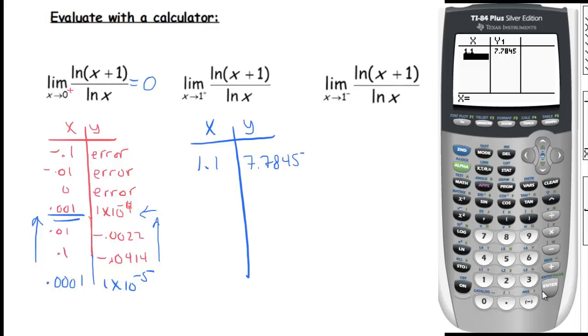Try one point zero one, even closer to one. One point zero one gives you seventy point one six two. Let's try one point zero zero one. You get six ninety three point nine nine. Let's try one more. One point zero zero zero one gives you six thousand nine hundred thirty two point three. So it looks like as x is approaching one from the right hand side our y value is approaching infinity.